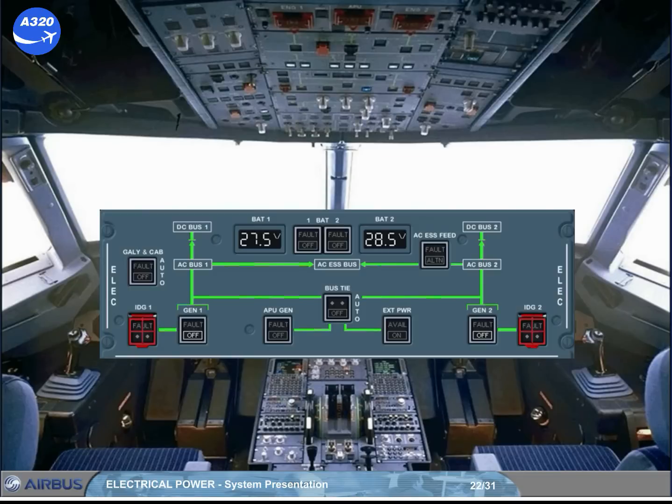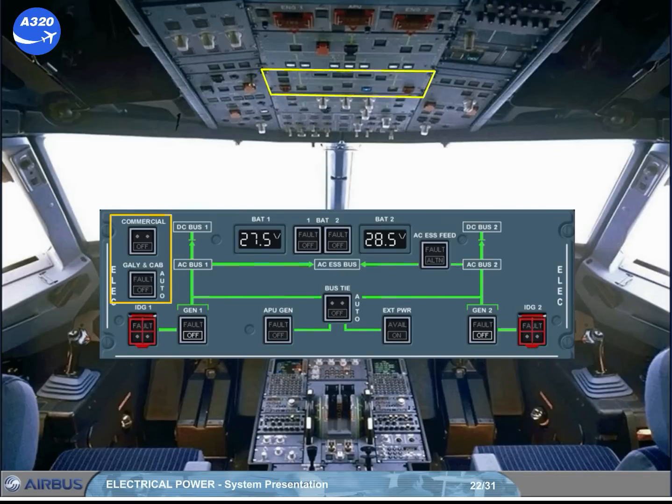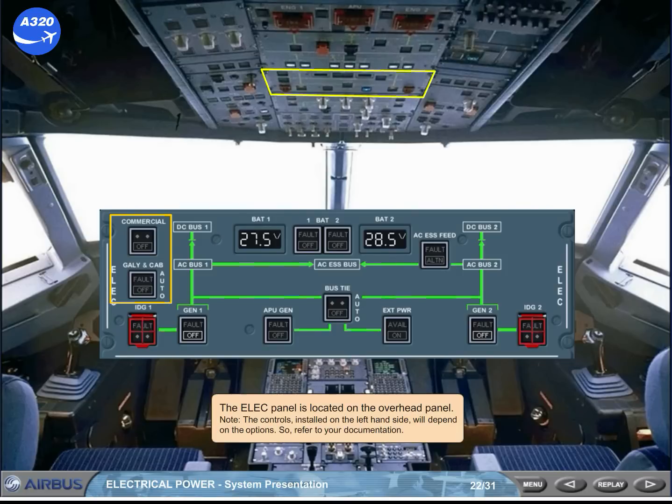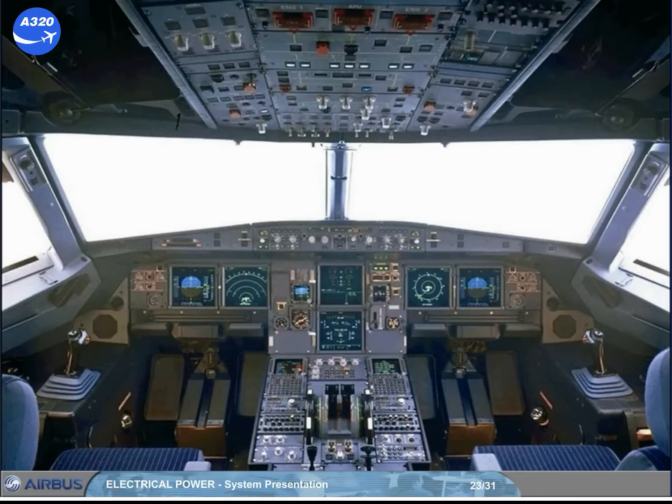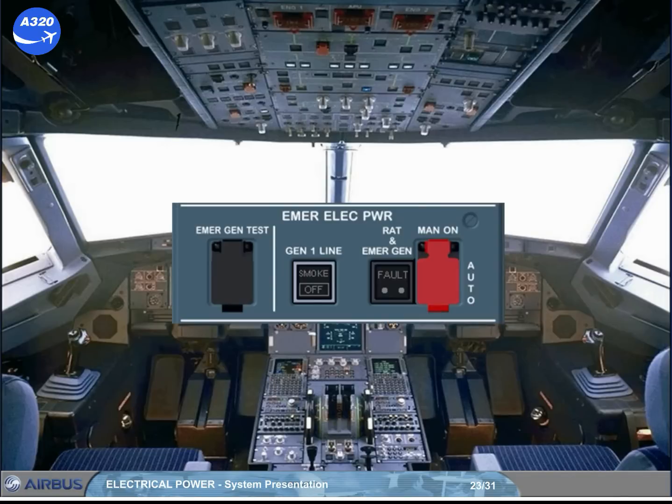The elect panel is located on the overhead panel. Note, the controls installed on the left hand side will depend on the options, so refer to your documentation. For emergency cases, there is an emergency electrical power panel on the left side of the overhead panel.